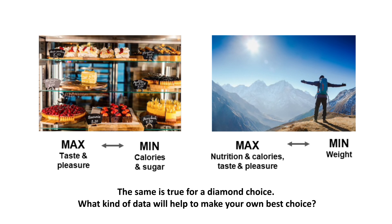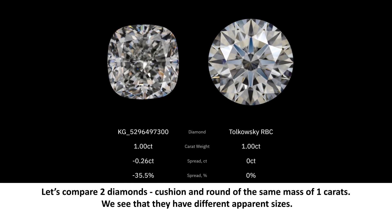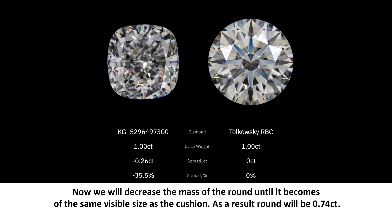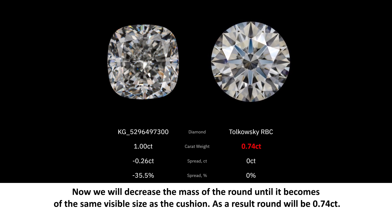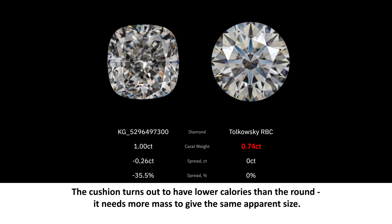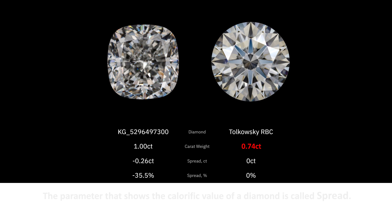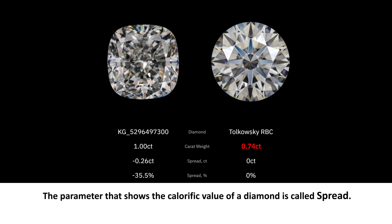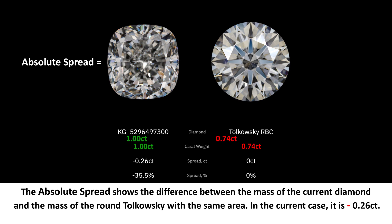The same is true for a diamond choice. What kind of data will help to make your own best choice? Let's compare two diamonds — a cushion and a round of the same mass of one carat. We see that they have different apparent sizes. Now we will decrease the mass of the round until it becomes the same visible size as the cushion. As a result, the round will be 74 points. The cushion turns out to have lower calories than the round — it needs more mass to give the same apparent size. The parameter that shows the calorific value of a diamond is called spread.